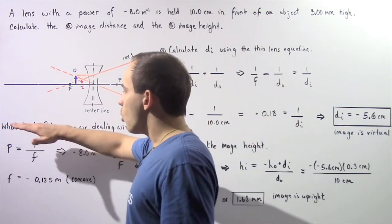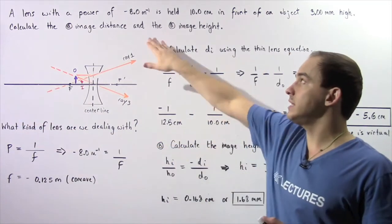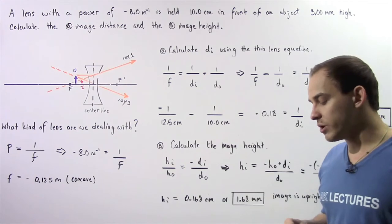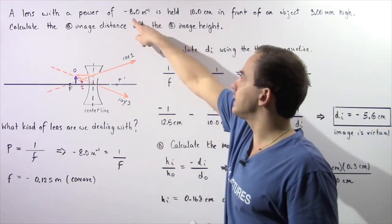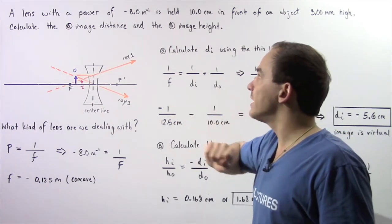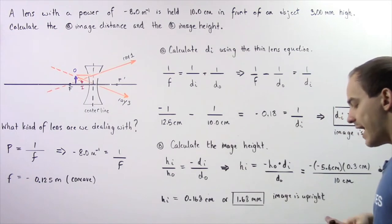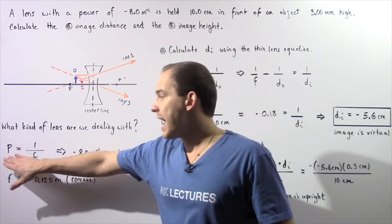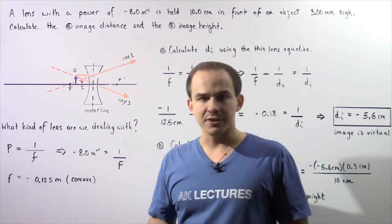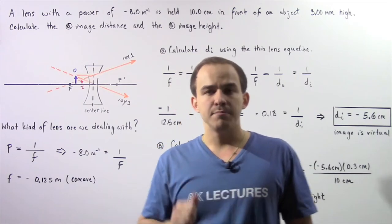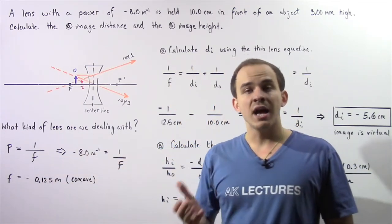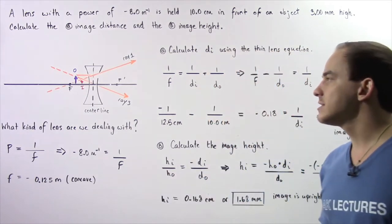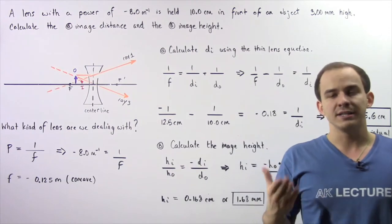Let's begin by asking the following question: what kind of lens are we dealing with, and what exactly tells us what type of lens we have? Do we have a concave lens or a convex lens? We know that power is negative 8 meters to the negative 1. Recall that power is equal to 1 divided by the focal length. Because our power is negative, our focal length is also negative, and the only time we deal with a negative focal length is when we have a diverging or concave lens.